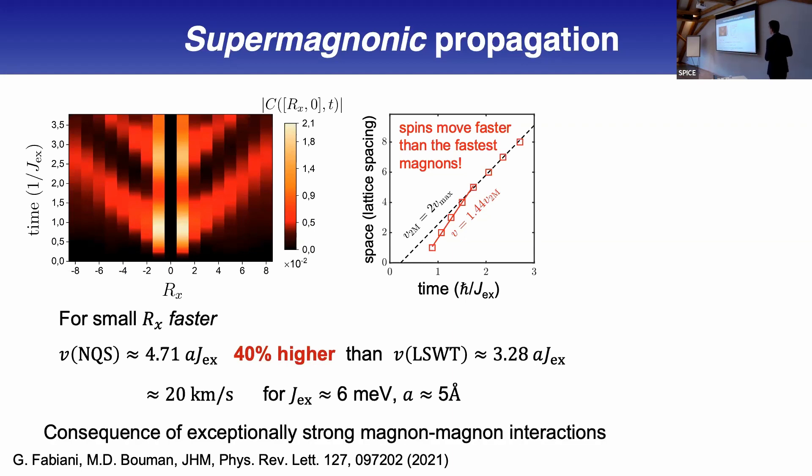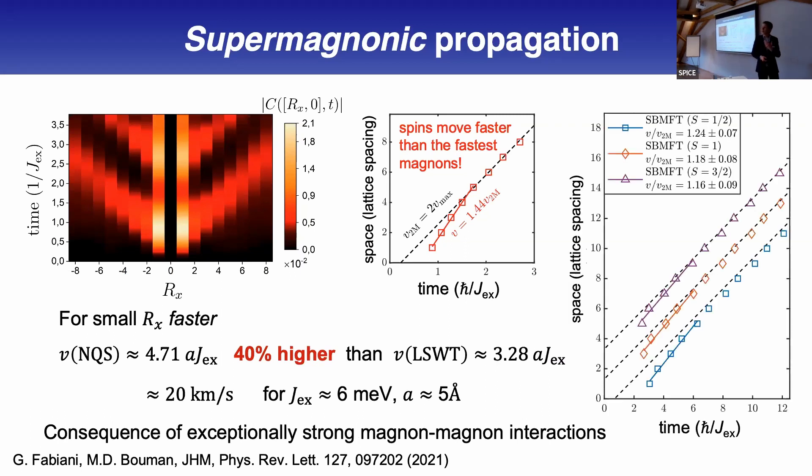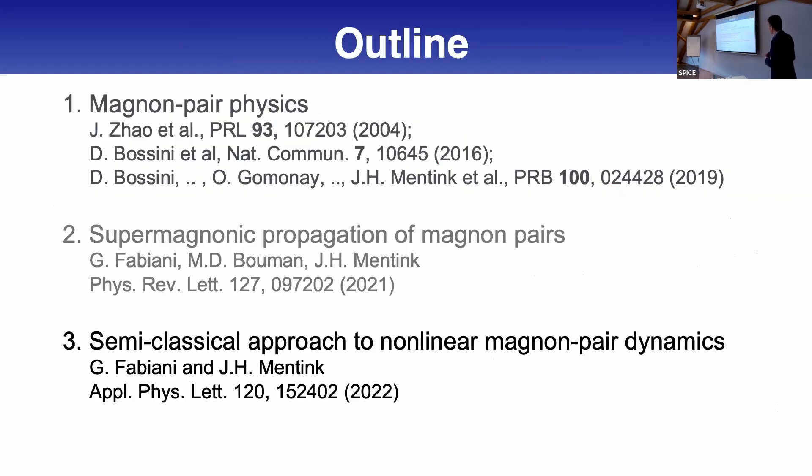To understand that, machine learning does not give you an answer, but we could understand this based on simpler mean field description using single boson mean field theory. We could show this is really an effect of quantum fluctuations. Quantum fluctuations enhance the magnon-magnon interactions, and that's why we have this exceptionally high propagation velocity. Magnons which interact can propagate even faster than magnons that do not interact.